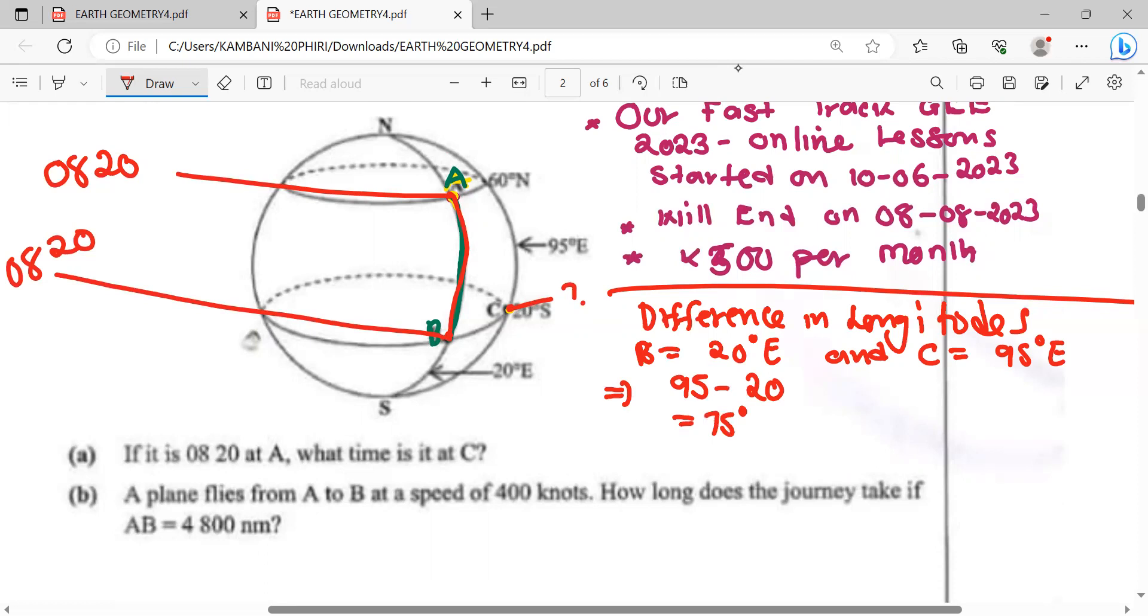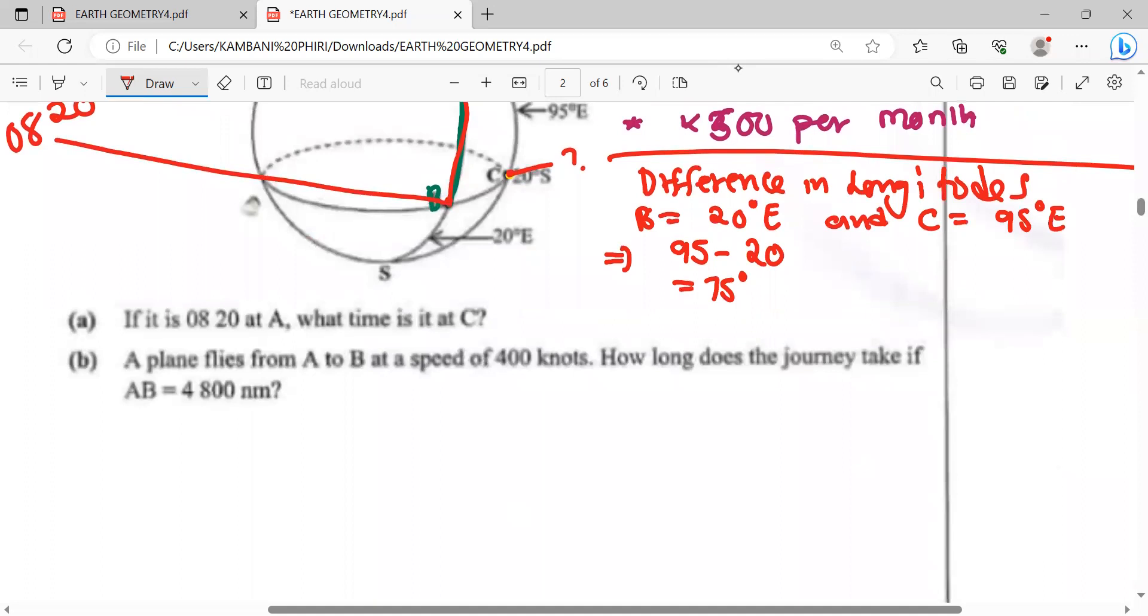Now we convert that difference in longitude to difference in time. We know that for every 15 degrees gained or lost, there is one hour gained or lost. So to find the difference in time, divide 75 degrees by 15 degrees, which gives us 5 hours.